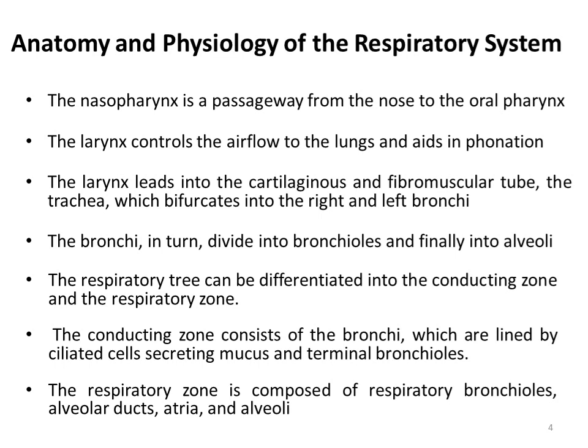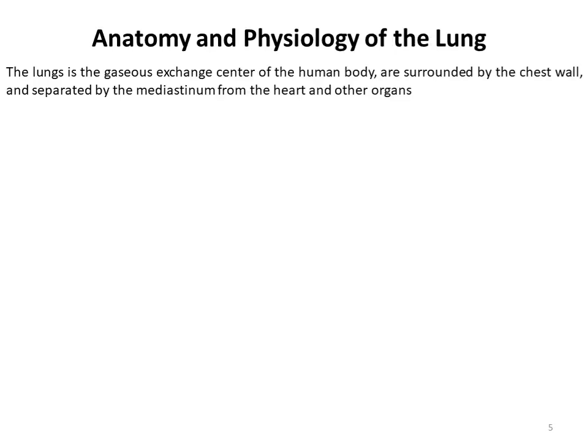The respiratory tree can be differentiated into two zones: conducting zone and respiratory zone. The conducting zone consists of the bronchi, which are lined by ciliated cells secreting mucus, and terminal bronchioles. The respiratory zone is composed of respiratory bronchioles, alveolar ducts, atria and alveoli.